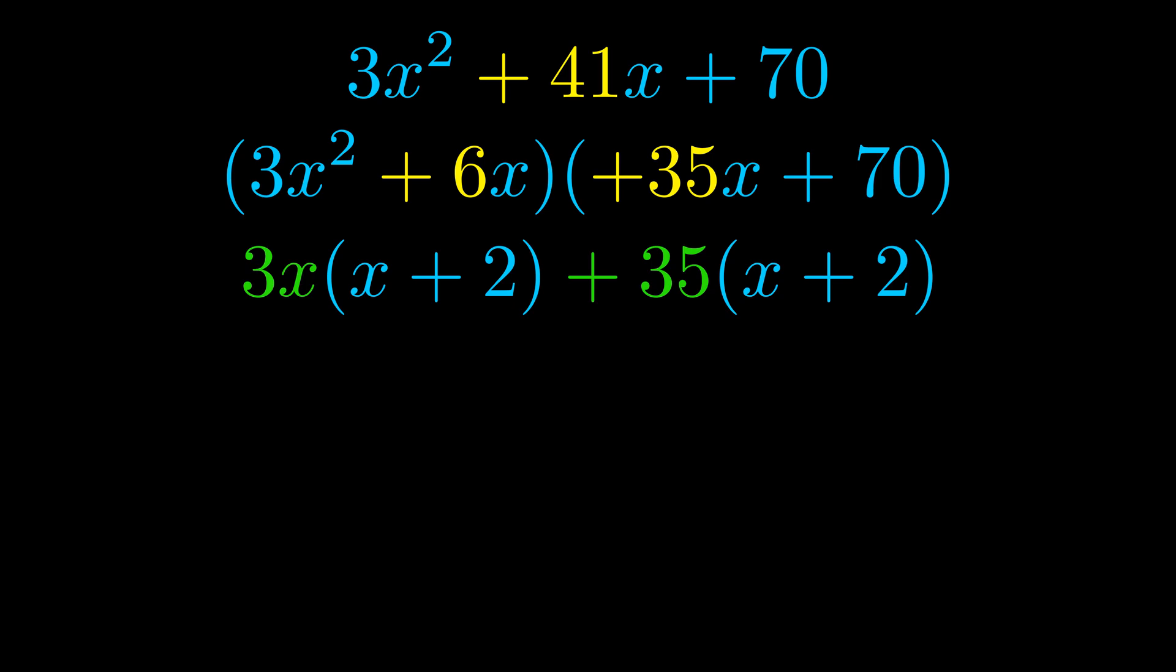Notice also how what remains inside of the parentheses is the same in both cases. The blue values are the same. Those blue values will become one of our factors and we will combine the two green values the GCFs that we pulled out to get the other one. And that is our fully factored equation.